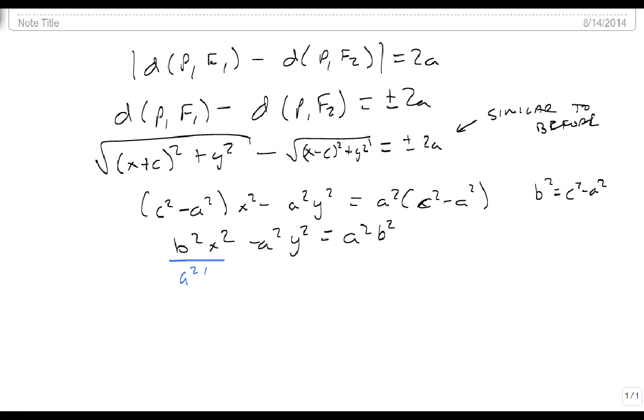Divide everything by a squared b squared, and we get x squared over a squared minus y squared over b squared equals 1. And so there's our standard form.